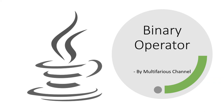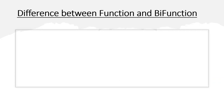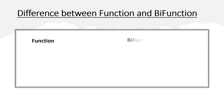Coming back to this video, I hope you remember the difference between Function and BiFunction. Let's recall it. A Function is a functional interface that takes two arguments — one as the input type and the other as the return type, where T is the input and R is the return type. A BiFunction is also a functional interface that takes three arguments — two are the input and the last one is the return type, where T and U are the inputs and R is the return type.